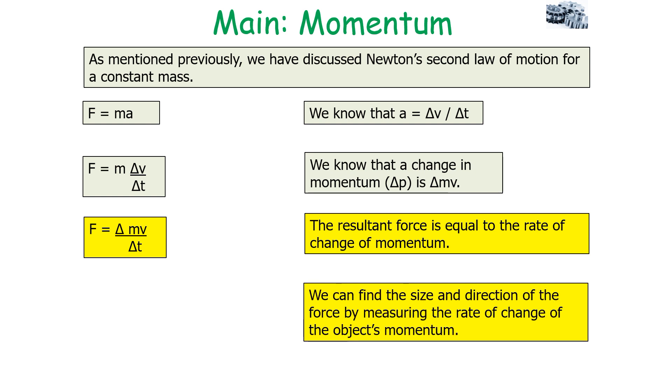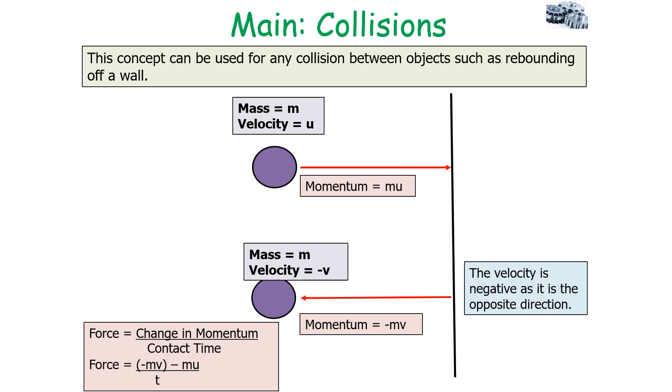We can find the size and direction of the force by measuring the rate of change of an object's momentum. This can be used in many different situations. For example, think about an object rebounding off a wall. We know that the force is equal to the change in momentum over the contact time with the wall. So we can therefore say F equals minus mv minus mu over t, and that allows us to work out the force exerted on this object. Note we've got a minus v because it's in the opposite direction to the original velocity.